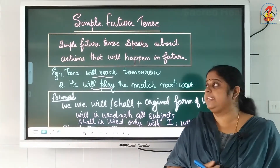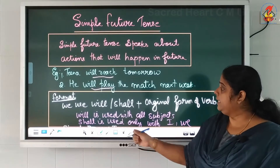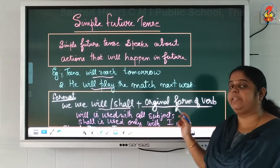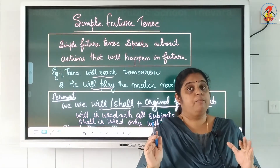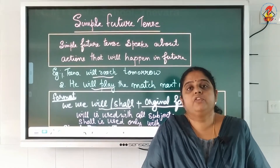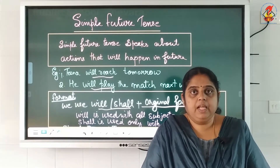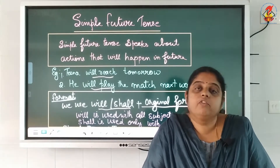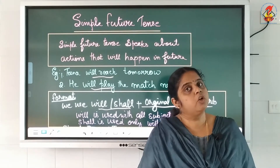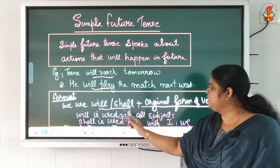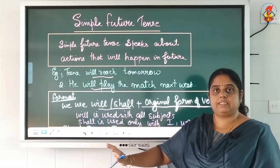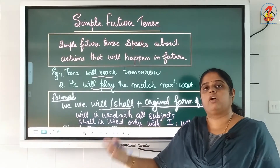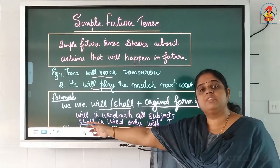So what is the format of writing simple future tense? We use will or shall plus the original form of the verb. That is the format of simple future tense. Now, what is the difference between will and shall? We use will with all the subjects — whatever the subject is, singular, plural, I, we, you — we can use will.